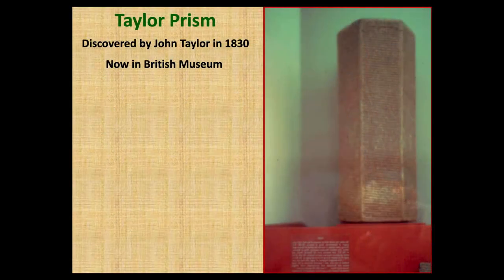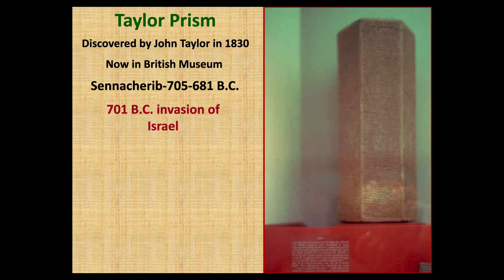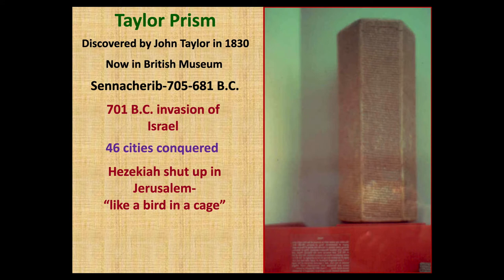The Taylor Prism, which is in the British Museum, was discovered in 1830, and it records the expeditions and conquests of Sennacherib, king of Assyria from 705 to 681 BC. In 701 BC, Sennacherib invaded Israel — recorded on this prism, and a couple of others record the same events. Forty-six cities were conquered by Sennacherib, and Hezekiah the king of Judah is mentioned by name. He says, 'Hezekiah is shut up like a bird in a cage.' You can read about this in 2 Kings 18 and 19.